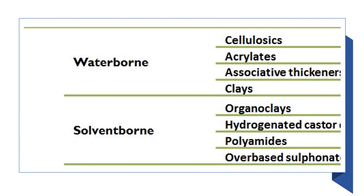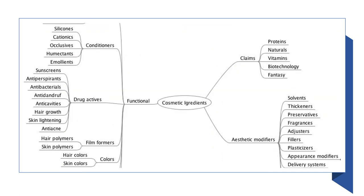Clays are also used, while solvent-bond thickeners may include organoclays, hydrogenated castor oils, polyamides, and over-based sulfonates. These thickening agents have a wide number of roles in various cosmetic ingredients — as aesthetic modifiers, conditioners, film formers, and colors. They are not only widely applicable in cosmetics, but also in the paints industry and ink industry.